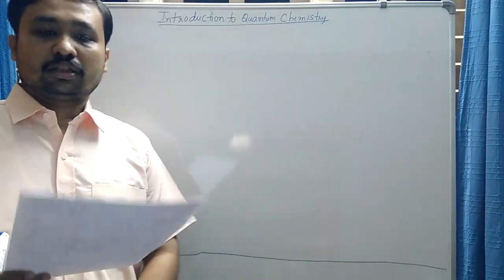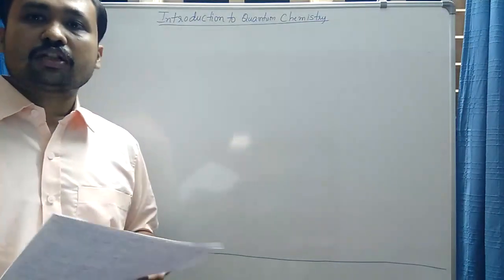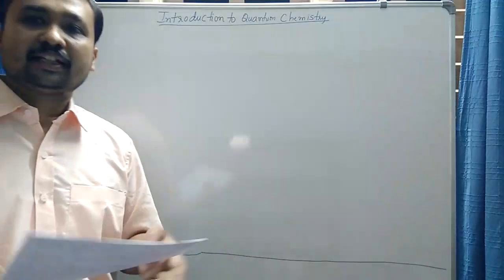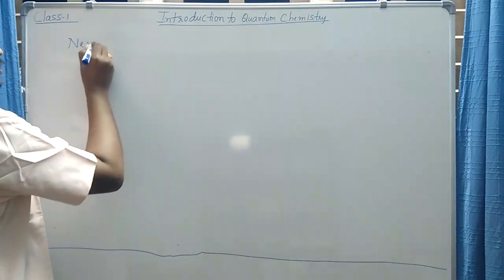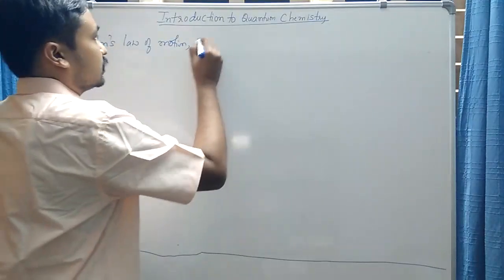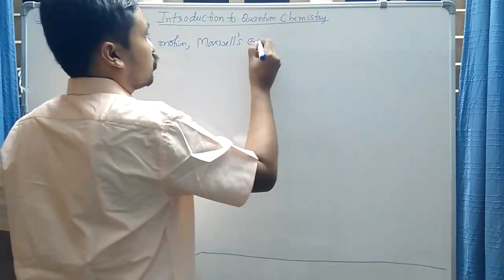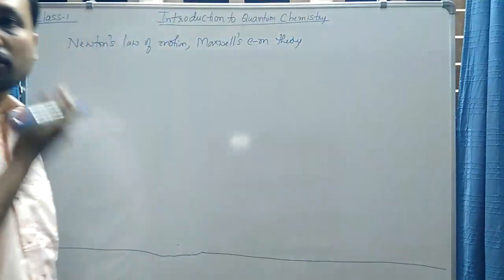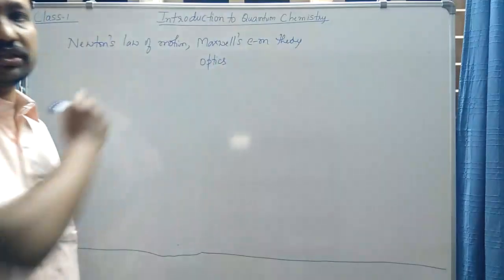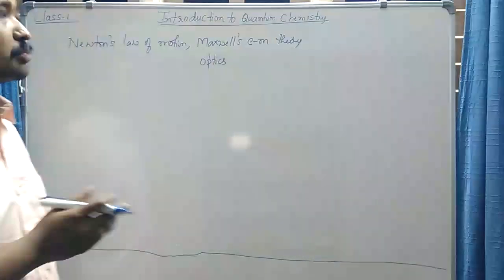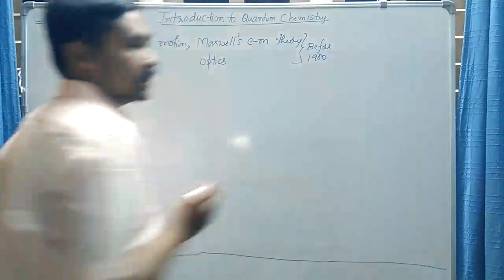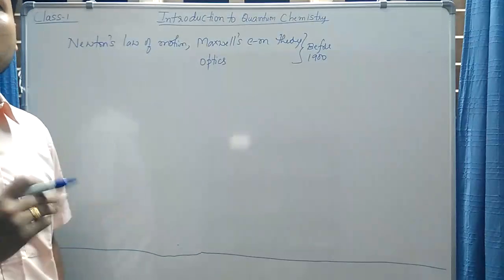I already told you in our first class in the Zoom platform that quantum mechanics was developed around 1900. The collection of theories that existed before 1900 — such as Newton's laws of motion, Maxwell's Electromagnetic Theory, and optics — all those theories or rules or laws that existed before 1900 are now called as classical theory.